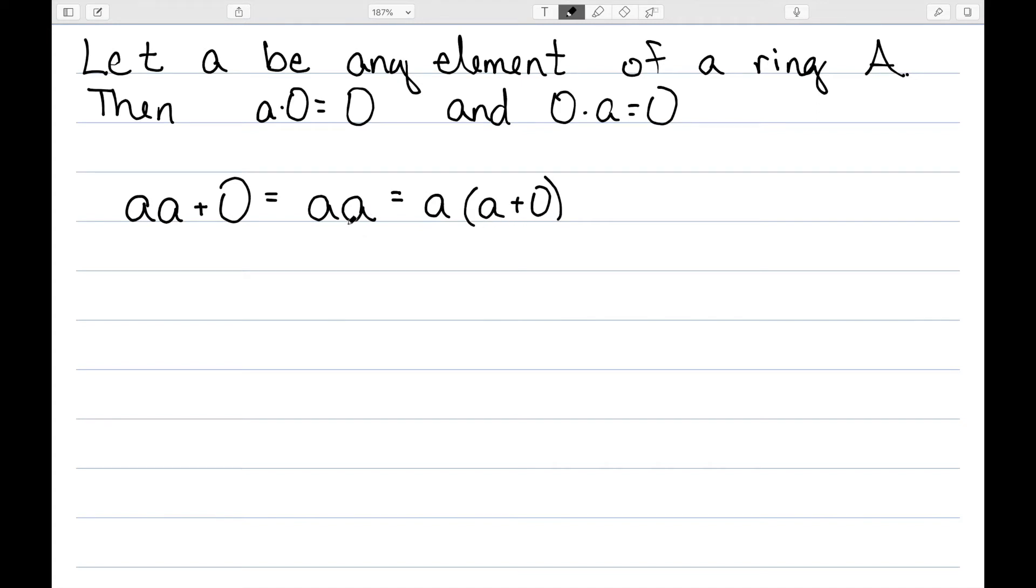Well, since A plus 0 is the same thing as A, I can write this as A times (A plus 0). Distributive property tells me this is AA plus A0. So now I have that AA plus 0 equals AA plus A0.